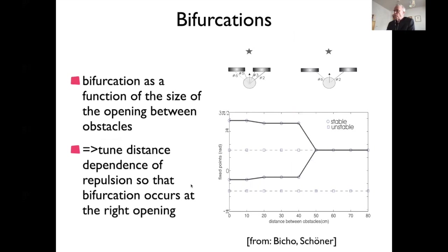If you systematically vary the distance between the obstacles, you can track out the stable states — circles connected by a fat line — and the repeller states — open squares. You see a very nice pitchfork bifurcation: as the distance between the obstacles increases, at shorter distances you have two attractors meaning going around the obstacle on each side with a repeller in the middle; as the gap widens sufficiently, these merge into a single attractor that allows you to move through. There's also always a repeller on the backside — the decision point where you decide whether to go left or right around the obstacle.